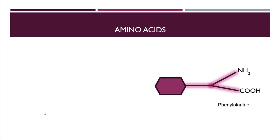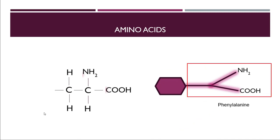Next is phenylalanine. You know how to make the fork structure — print it out and just attach a benzene ring to it. This is the official structure for phenylalanine.